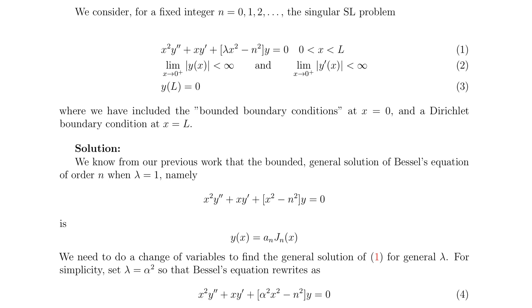We need to do a change of variables to find the general solution of equation 1 for a general lambda. For simplicity, set lambda equal to alpha squared so that Bessel's equation rewrites as in equation 4.